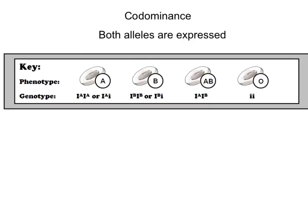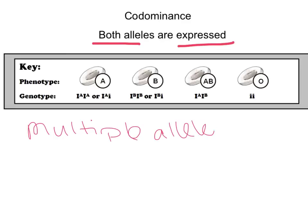The first thing we have is what's called co-dominance. In co-dominance, both alleles are expressed. With a co-dominance situation, it's usually a multiple allele situation — I've got more than just two alleles. So I've got multiple alleles, and more than one of them is considered dominant.